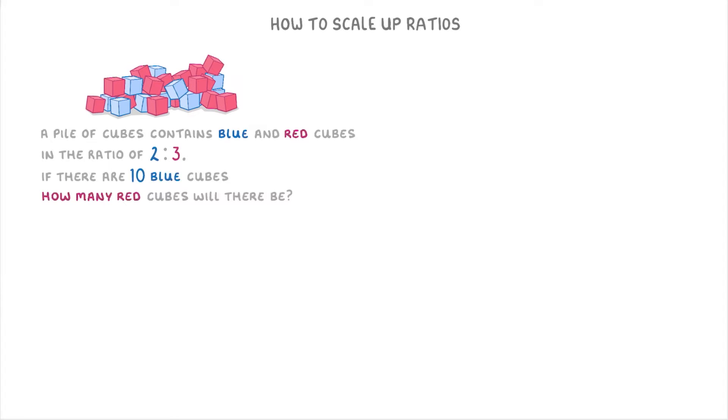So the way that I would do this is I'll take the ratio 2 to 3 that we were given, and then I'll take the number 10 and put it underneath the number 2 because the left side of our ratio refers to how many blue cubes we have. Then to work out how many red cubes we'd have, we're basically trying to work out the value of this number. To do this we need to think what would we have to multiply 2 by to get to 10, which would be 5 because 2 times 5 is 10. And this means that we also have to multiply the 3 by 5 as well to find that there will be 15 red cubes.